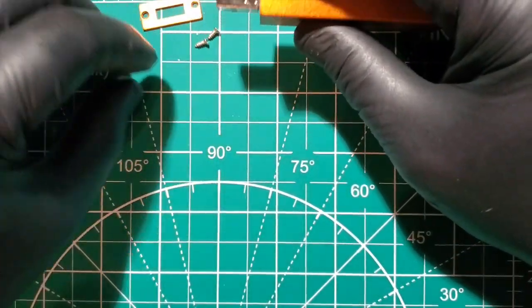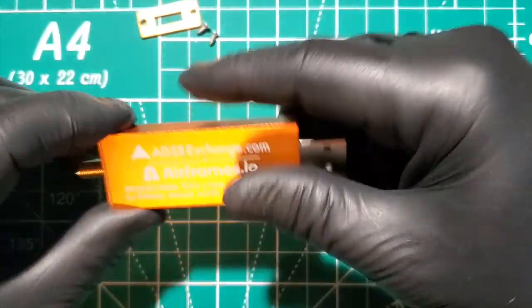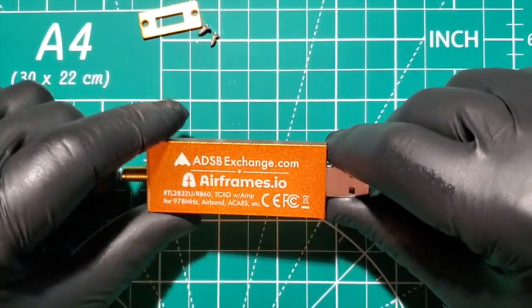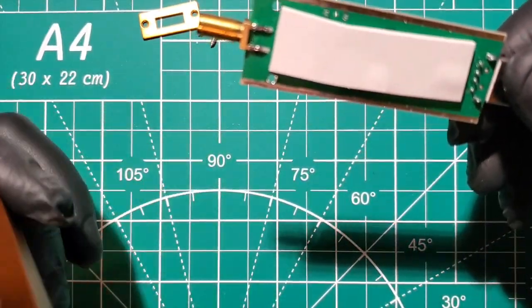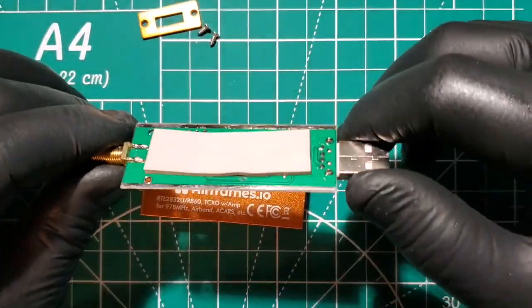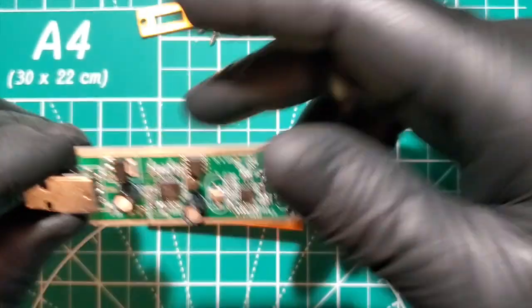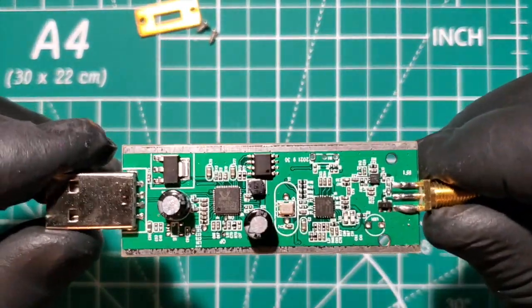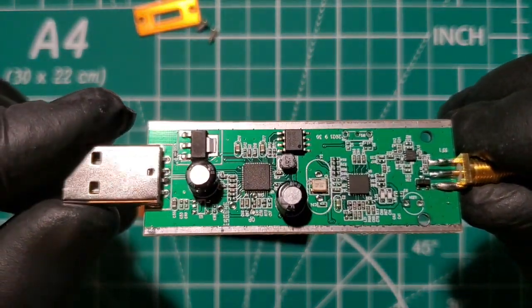Now you can get a blue one that has a filter built in, but this is not that. So here it is. We have a little tape there to transfer heat. And we have the inside of the RTL enclosure.